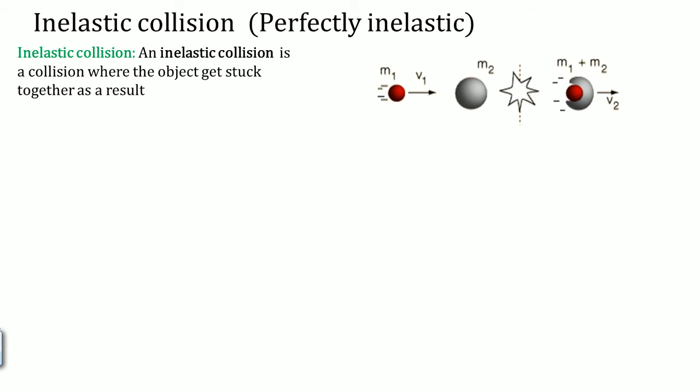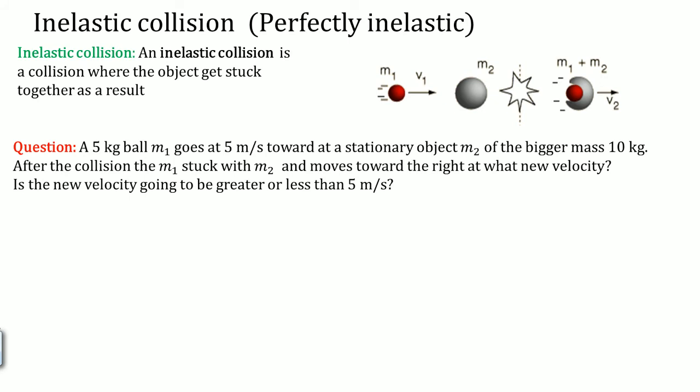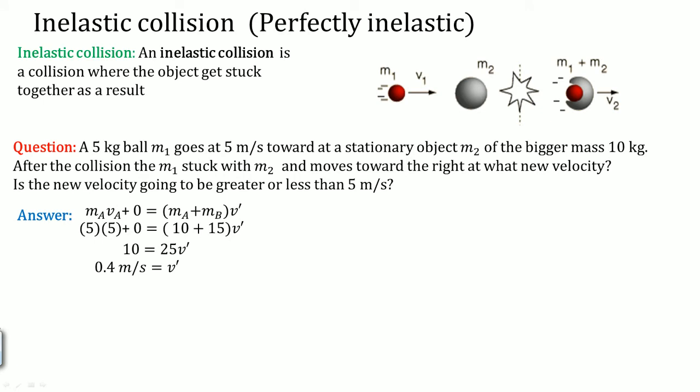The next type is when energy is not conserved. This is called an inelastic collision — specifically, perfectly inelastic collision — where objects collide and get stuck together. Because they get stuck together, there is heat transfer involved. For example: a 5-kilogram ball M1 goes at 5 m/s toward a stationary M2 of 10 kilograms. After collision, M1 and M2 stick together and move to the right. The new velocity is going to be less than 5 m/s because the new combined object has greater mass. Using the equation — M-A times V-A plus zero equals (M-A plus M-B) times V-prime — dividing gives V-prime equals 0.4 meters per second. It's super small because the mass is so large (25 kg combined).